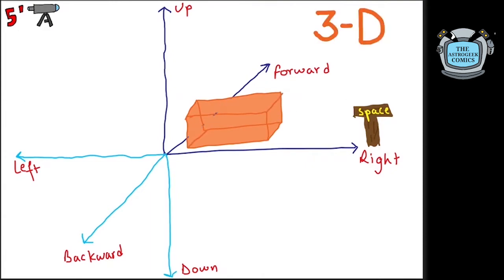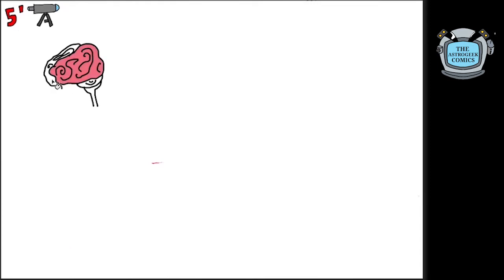Any solid object like a cuboid has length, breadth, and height. To understand the world of higher dimensions,